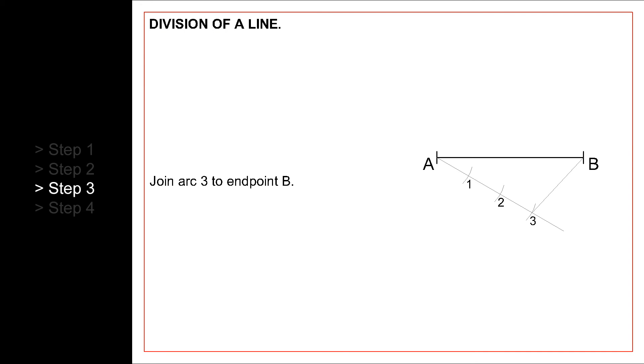Draw a line from the last arc, which in our case is number 3, to endpoint B. And finally, from arcs 1 and 2, draw lines parallel to line 3B, as shown.